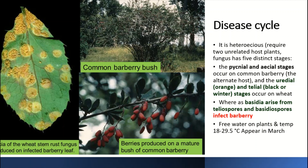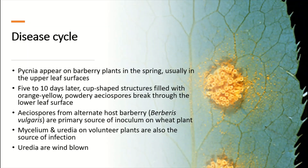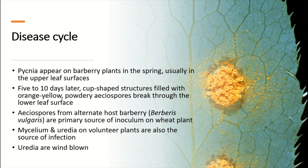Aecial spores appear on the lower surface of barberry plant leaves, while pycnia appear on barberry plants in spring, usually on the upper surface of the leaf. The aecia are filled with orange-yellow powdery aeciospores, which break through the epidermis of the leaves and come out. These aeciospores are the primary source of inoculum which infects wheat.